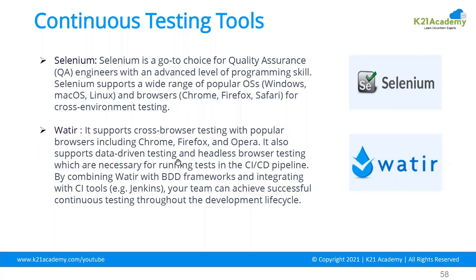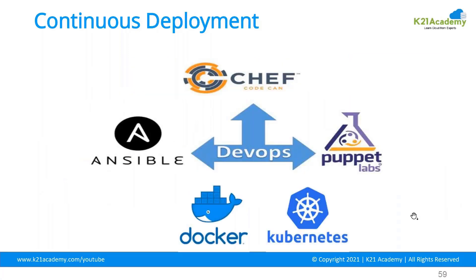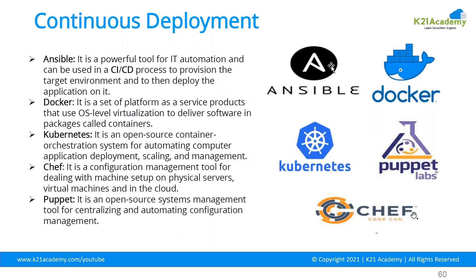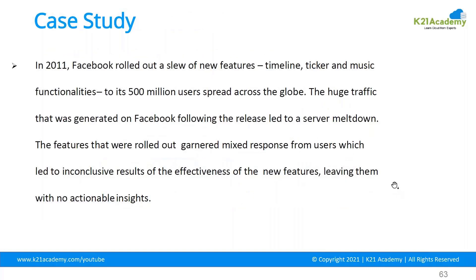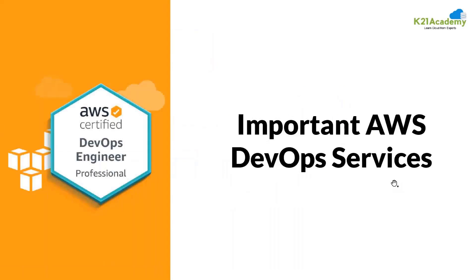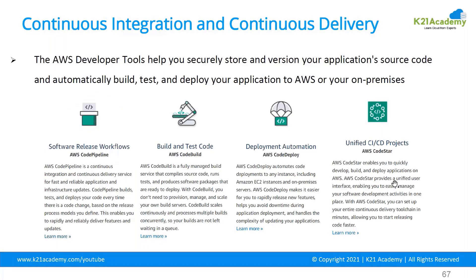Testing tools include Selenium for web applications and JUnit for unit testing. For deployment, there are many tools available. When you set up all these things on your own platform it takes more time, is less efficient, and requires a lot of work. This is where you want to use cloud DevOps tools — instead of doing all that effort yourself, you can manage things more easily, efficiently, and securely using cloud DevOps services.